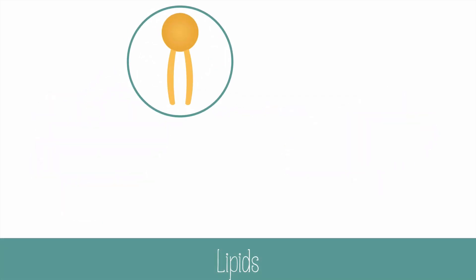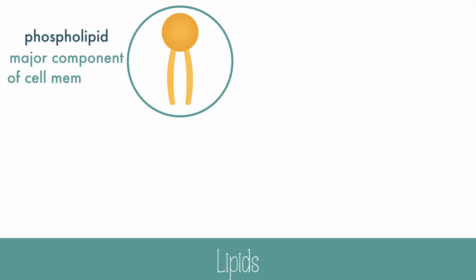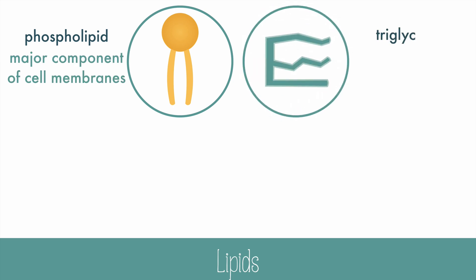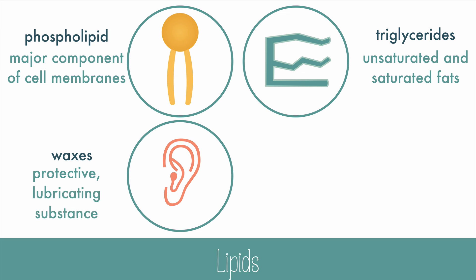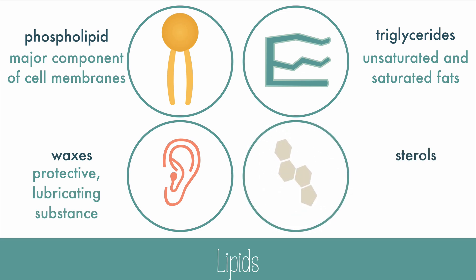Phospholipids are the major component of cell membranes and membrane-bound organelles. Triglycerides are fats and oils, also known as saturated and unsaturated fats. Waxes, like your earwax, are protective, lubricating substances. And sterols, like cholesterol or steroids, are used for cell wall integrity and for making hormones.